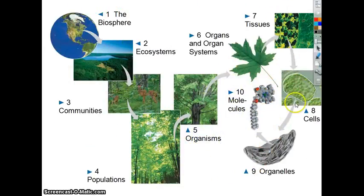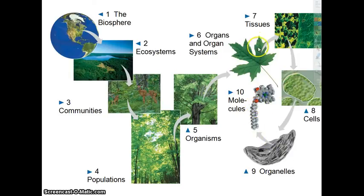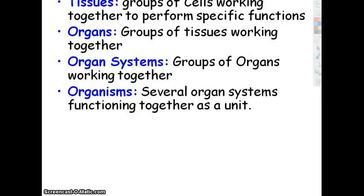This diagram shows the levels of organization in another way. Here are your molecules, and then several molecules organized in a specific way give us the emergent property of an organelle. Then cells, tissues, organs, systems — the whole thing. I have the definitions here.